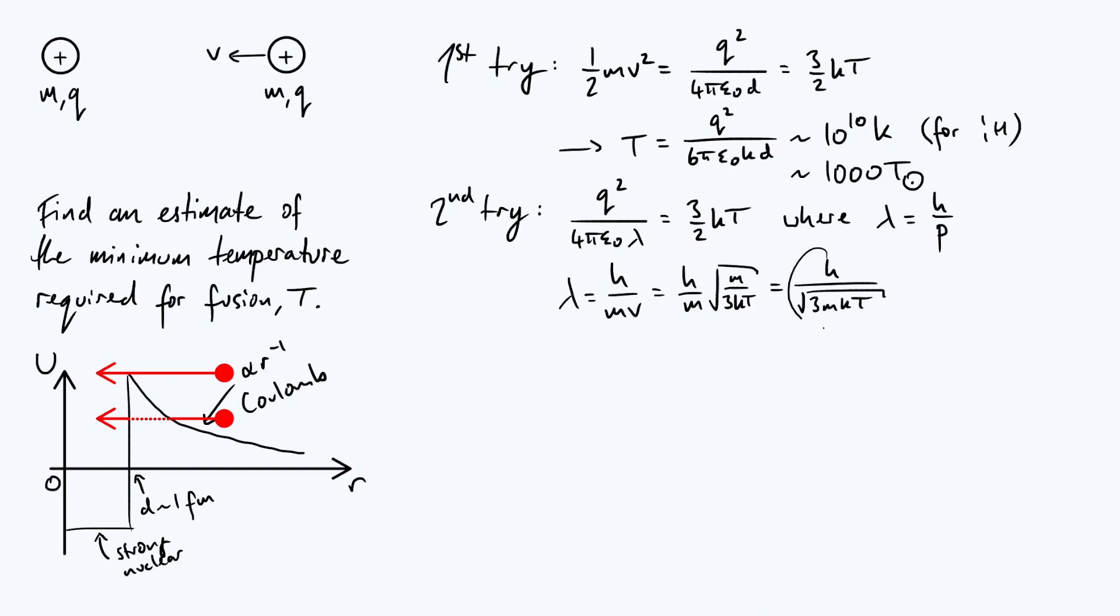So then all we have to do is take that expression that we just derived and substitute that for lambda in the conservation of energy equation. So what's going to happen? We are going to get q squared over 4 pi epsilon naught as our constant factor. Then it's 1 over lambda. So we're going to flip that whole thing upside down. So it's going to be the square root of 3 mkT divided by h. That's still equal to three halves of kT. So let's do a few things with this. First of all, let's multiply by 2.